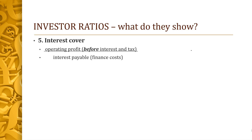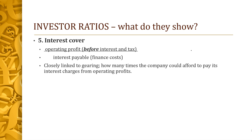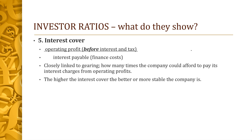Interest cover is about how affordable your interest payments are, and it's closely tied to gearing. It's the operating profit before interest and tax divided by the interest payable (finance costs). This shows how many times you can afford to pay your interest out of current operating profit. The higher the interest cover, the better and more stable the company is. An interest cover of one means you can only just afford your finance costs from operating profit — not a good situation — and that would usually be accompanied by high gearing, so quite risky.